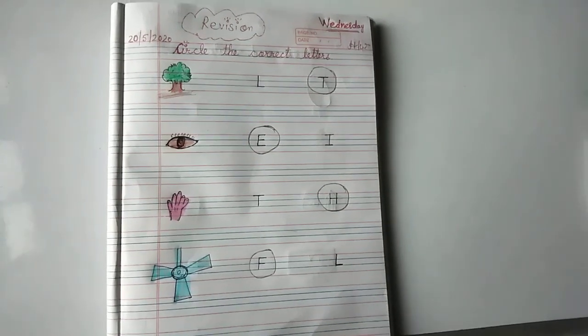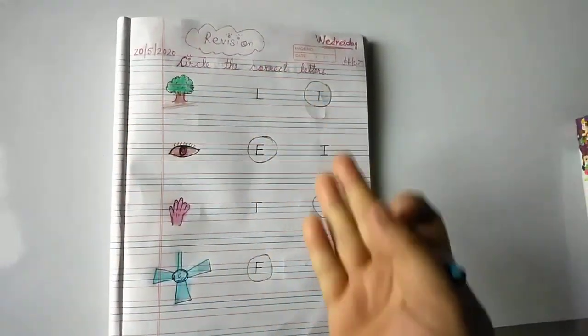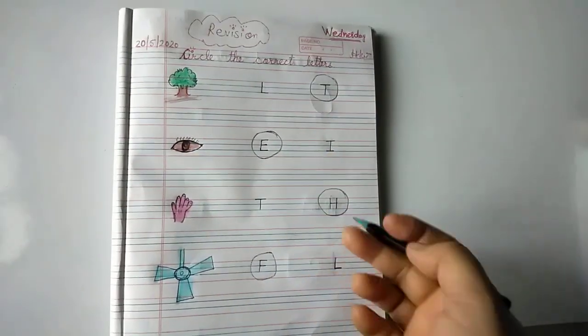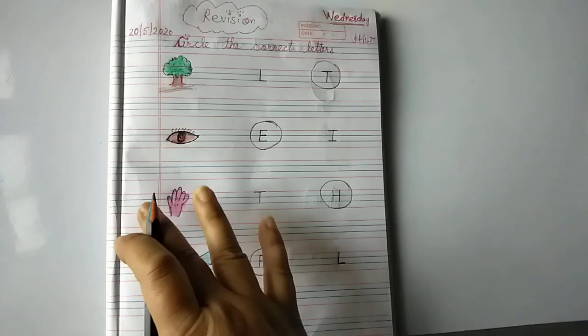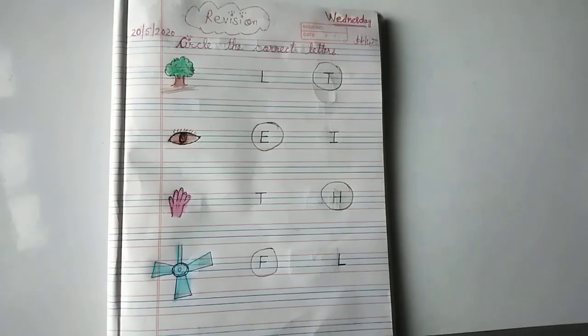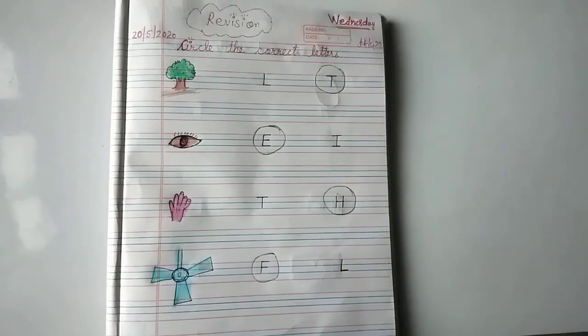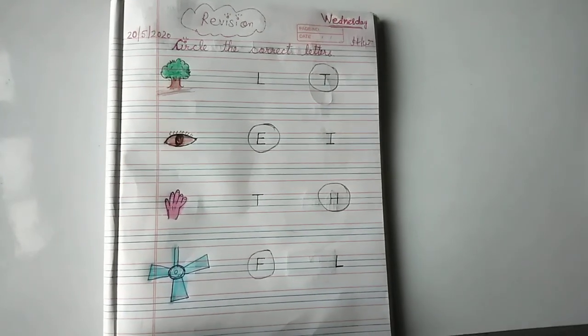At home also, all of you have to practice the same like this. Draw a picture, next to it write such letters, and tell which letter the picture's name starts with. Okay? And look carefully first at the letter, then look at the picture.